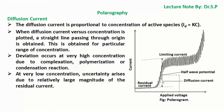The diffusion current is proportional to the concentration of the active species; that is, diffusion current ID = K × concentration of analyte. When diffusion current versus concentration is plotted, a straight line passing through the origin is obtained, valid for a particular range of concentration. Deviation occurs at very high concentration due to complexation, polymerization, or condensation reactions. At very low concentration, uncertainty arises due to the relatively large magnitude of the residual current.